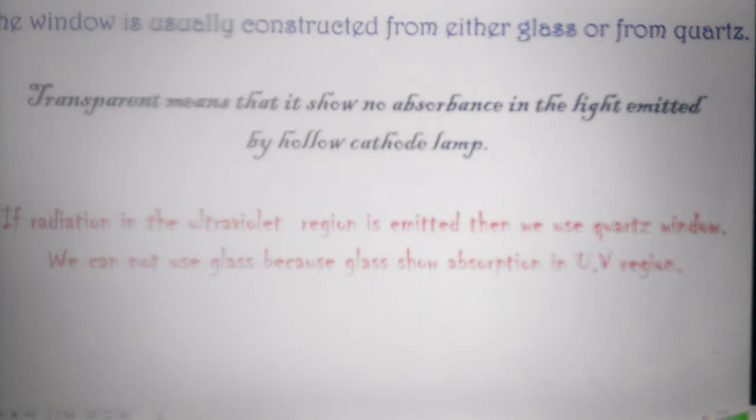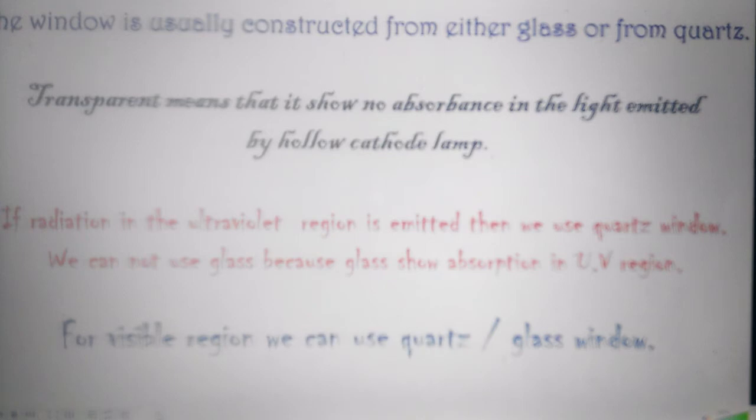If radiation in the ultraviolet region is emitted, then we use a quartz window. We cannot use glass because glass shows absorption in the UV region. For the visible region, we can use either quartz or glass window.